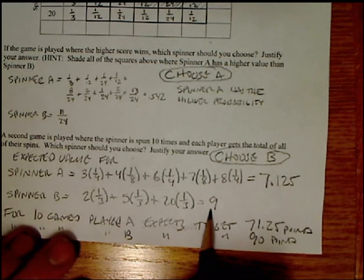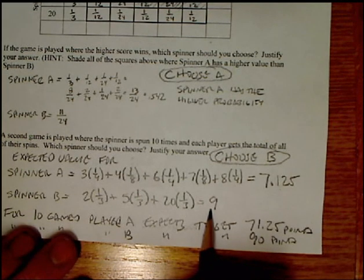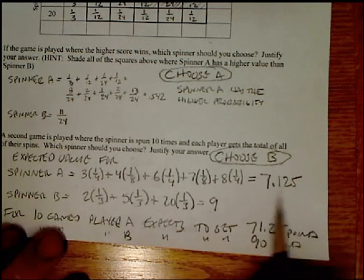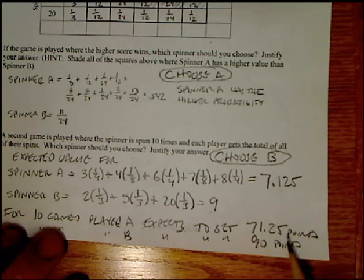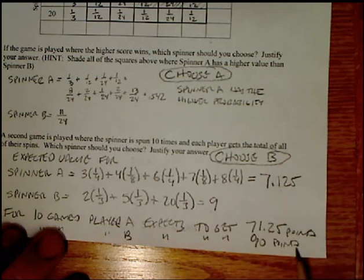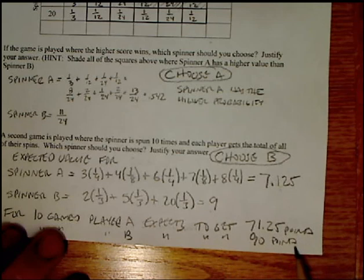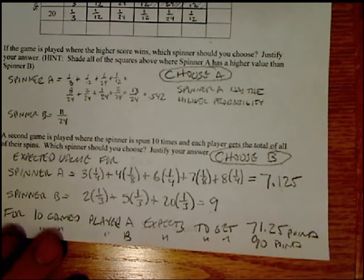So I already know spinner B is the one I should choose, because it has a higher expected value. But if I played 10 games, I would expect 71.25 points for spinner A, and 90 points for spinner B. So if spinner B had the higher total, I would choose spinner B.